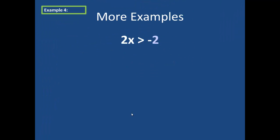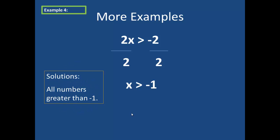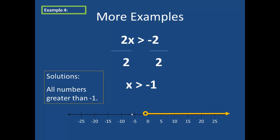In example 4, we are given the problem 2x is greater than negative 2. In order to solve this, I want to undo the multiplication, so I divide both sides by 2, yielding x is greater than negative 1. That means my solution set is all numbers greater than negative 1. So I have a number line, I put an open point at negative 1, and I draw an arrow pointing to the right.